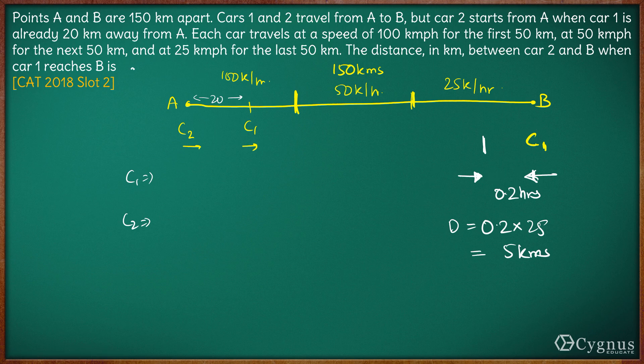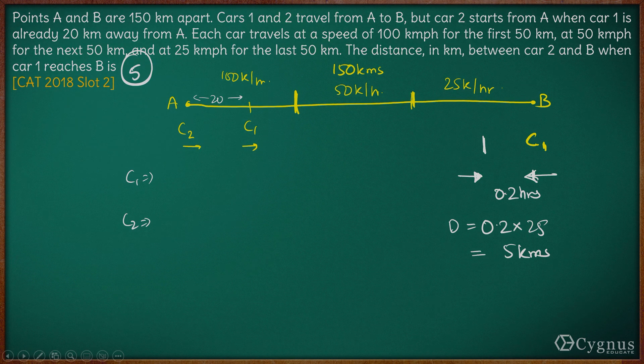So the answer is 5 kilometers. Car 2 is 5 kilometers behind Car 1 when Car 1 reaches B. That is it for this question. Thank you.